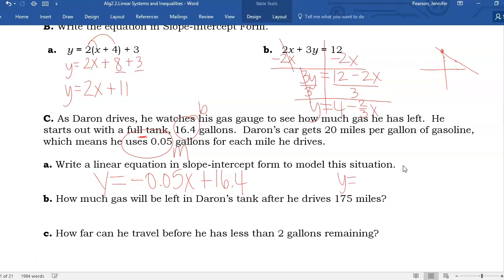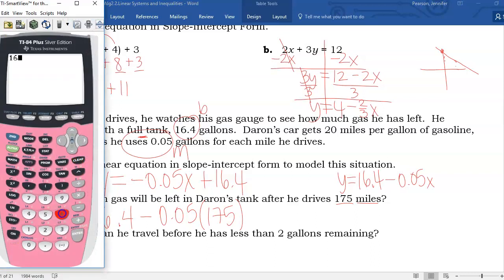And this is one where the context makes more sense to write it backwards. So I'm going to write it both ways. Because if we start with that much and use up this much, it's nice to see that it should be decreasing as we go along. So how much gas will be left after he drives 175 miles? We're using x to represent miles. So I'm going to replace x with 175. 16.4 minus 0.05 times 175. That means he has 7.65 gallons of gas left.